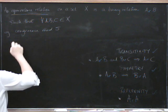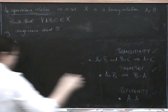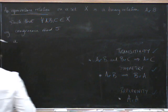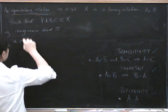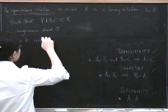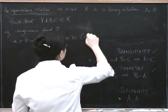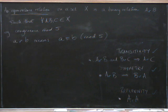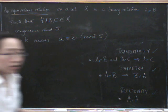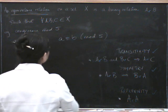That is to say, I'm going to define A is related to B means that A is congruent to B mod five. Maybe I should just start by saying what that actually means.